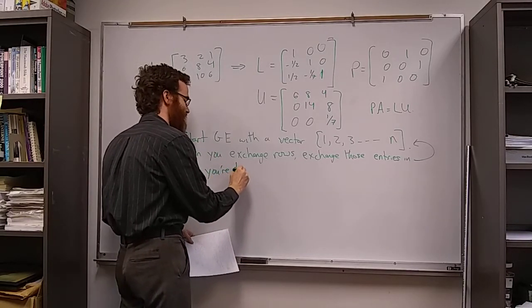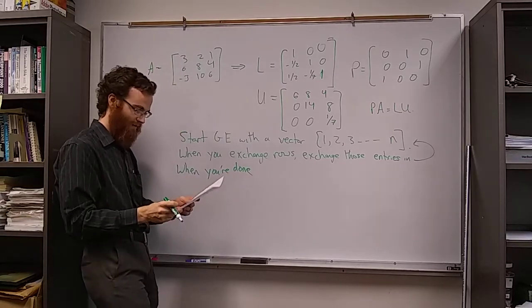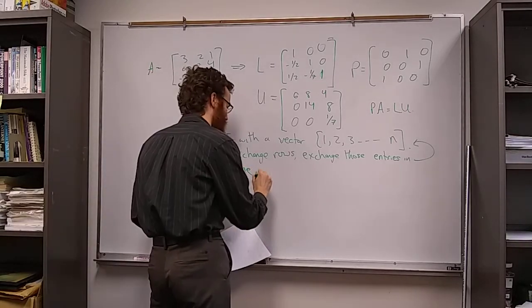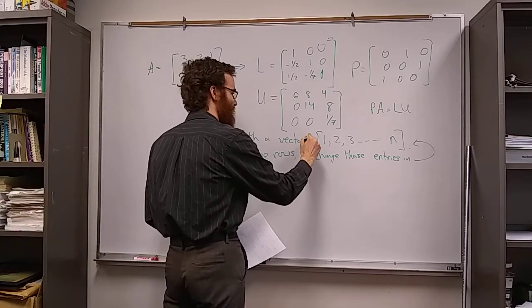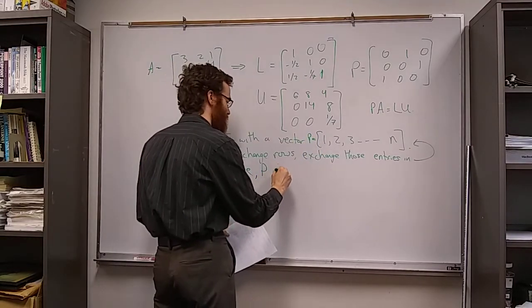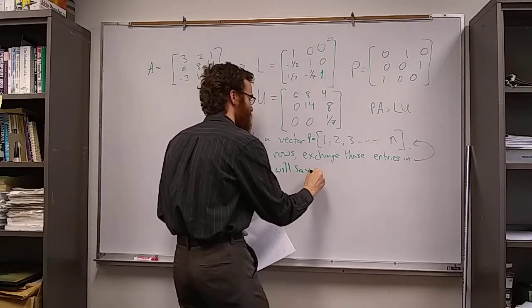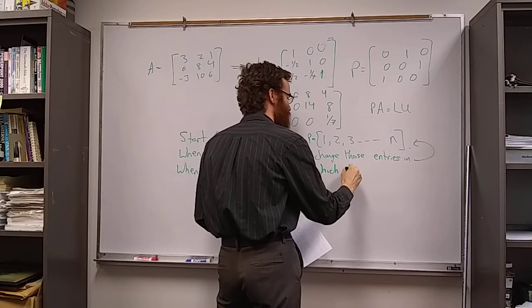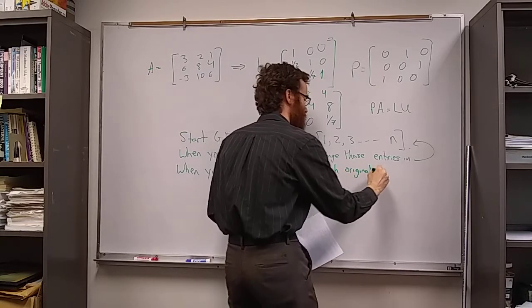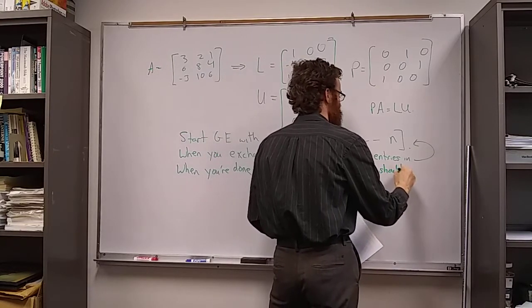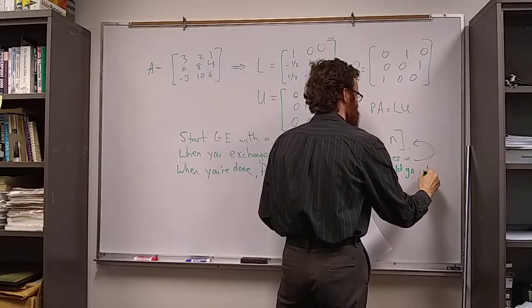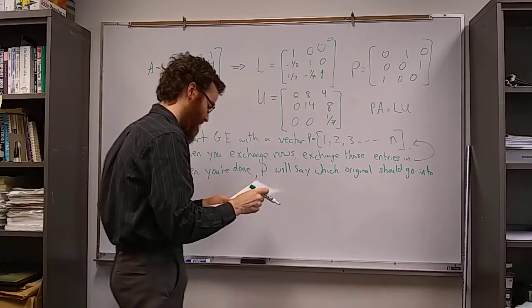So if you do this, when you're done with Gaussian elimination, this vector P will say which original row should go into which position.